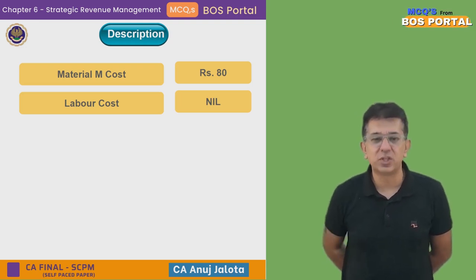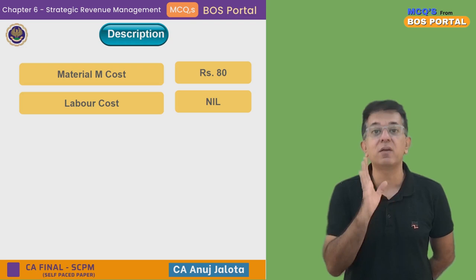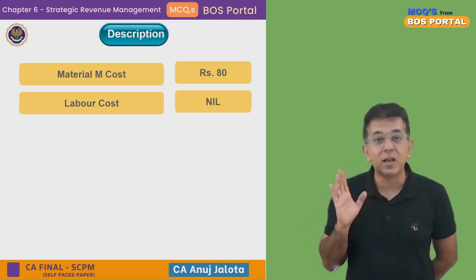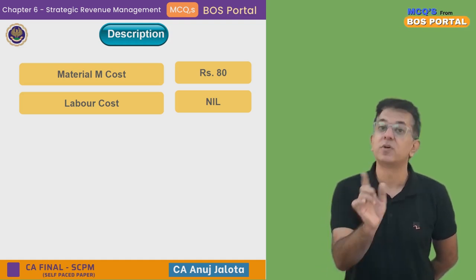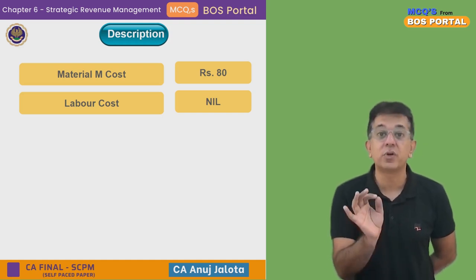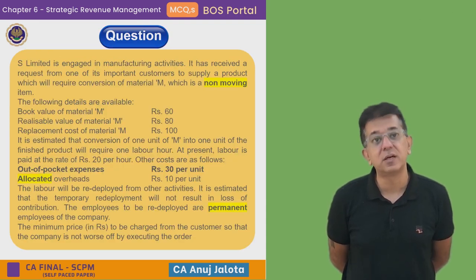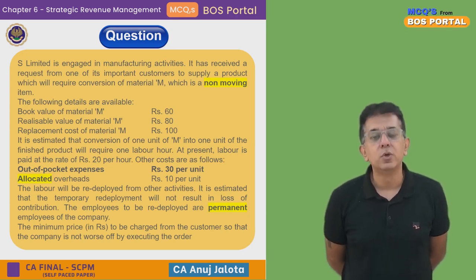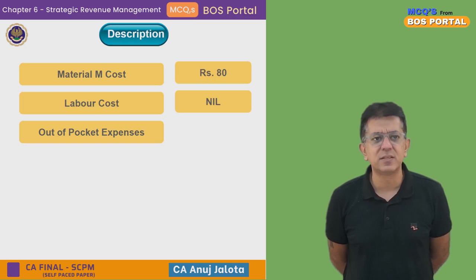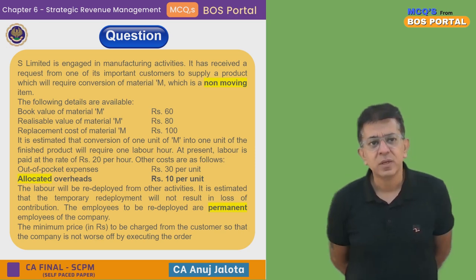Remember, this is not financial accounting — financial accounts is irrelevant here. We are doing decision making. If you are a businessman, you think nil extra labor cost. An accountant might say one hour at ₹20, but that amount you're paying anyway, so your extra cost because of this order is zero. Moving to out-of-pocket expenses: ₹30. Because of this order, you will incur ₹30 extra — that directly becomes a relevant cost. So out-of-pocket expenses relevant cost is ₹30.